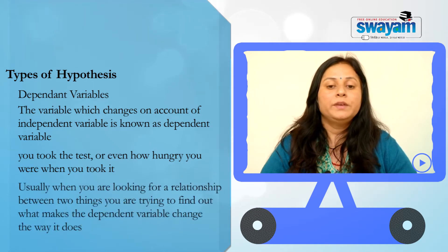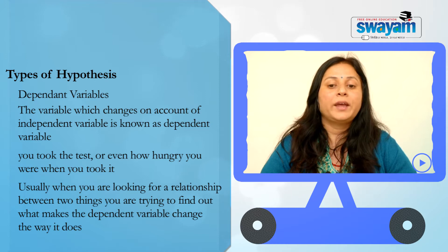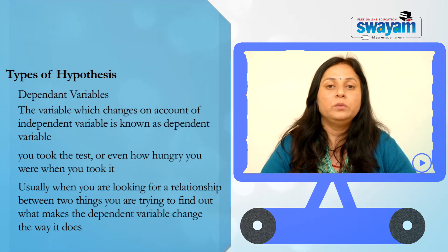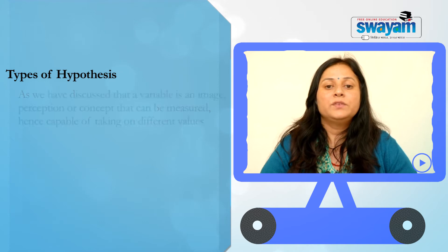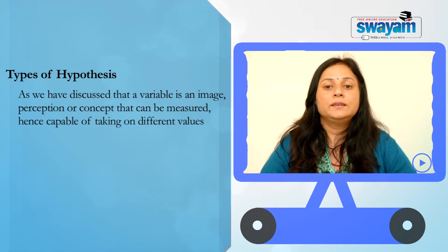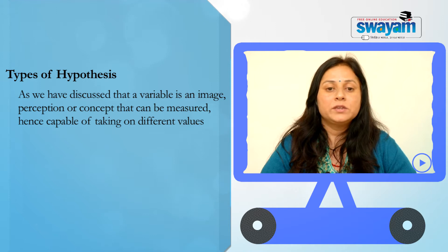Usually, when you are looking for a relationship between two things, you are trying to find out what makes the dependent variable change the way it does. As we have discussed, a variable is an image, perception or concept that can be measured, hence capable of taking on different values.